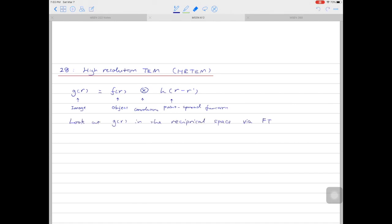So we can look at the image function g(r) in the reciprocal space via Fourier transform. So g(r) is equal to sigma u capital G(u) multiplied by the exponential 2 pi i u dot r.